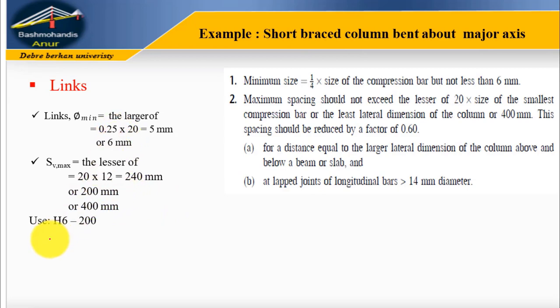The spacing is the lesser of 20 times 20, which is 400 mm, the least lateral dimension 200 mm, or 400 mm. We use 200 mm. Links are 8 mm diameter at 200 mm center to center spacing. At the section below and above the beam and at lap joints, this is reduced to 0.6 times 200 equals 120 mm center to center. Thank you.